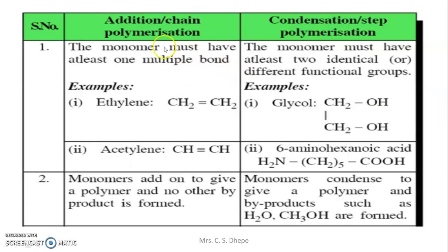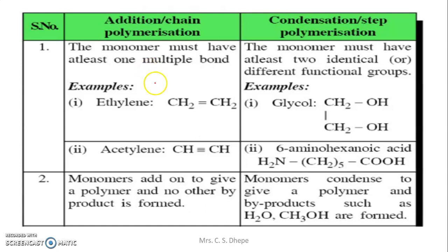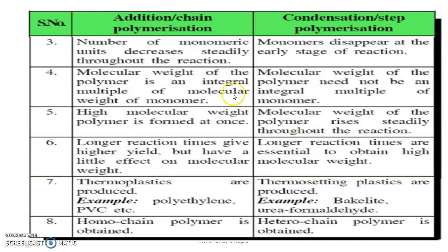Comparing the two types: Addition polymerization forms a homopolymer; condensation polymerization forms a copolymer (also called heterochain polymer). In addition polymerization no byproducts are obtained; in condensation byproducts are obtained. In addition polymerization, monomers disappear at the early stage; in condensation, monomeric units decrease steadily. Molecular weight is less in addition; higher in condensation. Addition polymerization forms thermoplastics; condensation forms thermosetting plastics.